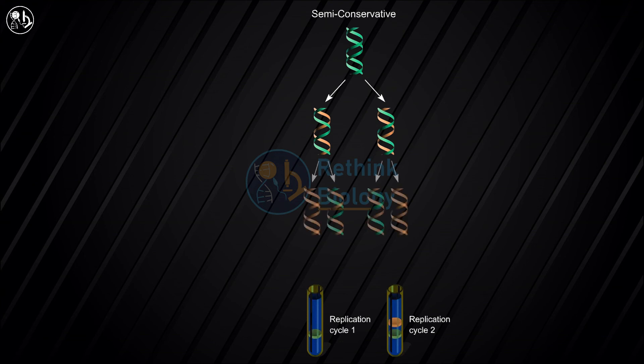The semi-conservative model predicted that the second replication would produce four molecules — two containing two light strands and two containing one heavy and one light strand. This would result in two bands in the gradient: one of intermediate density and one of light density. This prediction matched the experimental results, providing evidence that the semi-conservative model is the correct model of DNA replication.